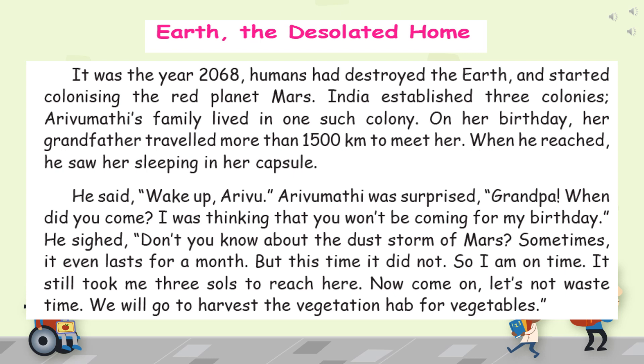Let me explain this paragraph. It was about 2068, after humans had destroyed everything — trees, birds, plants, everything. Once the Earth is destroyed, there is no life in Earth, so man started living in Mars. Man left Earth and went to stay in Mars, living in colonies. Arya Madhu's family was living in one such colony.